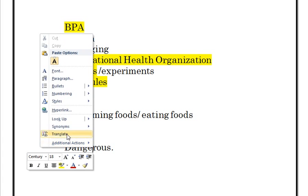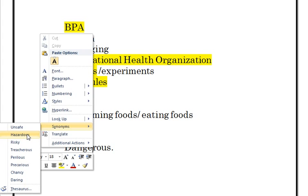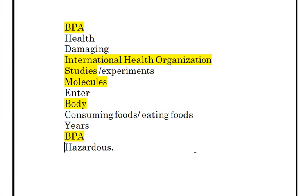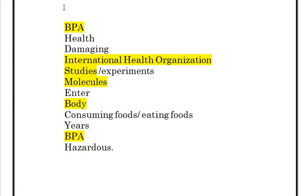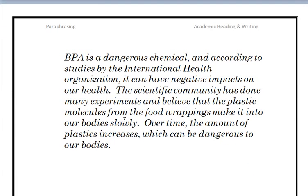The point is that you identify those words that really can't be changed and then identify those words that can, and you're halfway home. The next part is changing the grammar. So let's take a look at the paragraph that I paraphrased. Here's my version: "BPA is a dangerous chemical and according to studies by the International Health Organization, it can have negative impacts on our health. The scientific community has done many experiments and believe that the plastic molecules from the food wrappings make it into our bodies slowly."